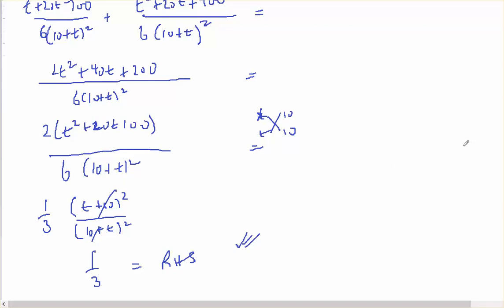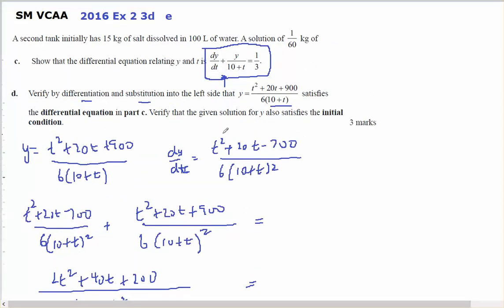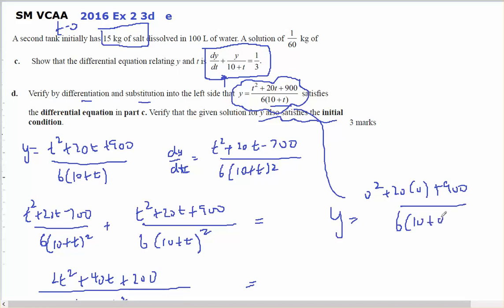The second part I had to do was satisfy that y satisfies the initial condition. The initial condition was that y equaled 15 initially, so when t equals 0. So y equals 0 squared plus 20 times 0 plus 900 over 6 times (10 plus 0), which equals 900 over 60, which equals 15, showing the initial condition is correct.